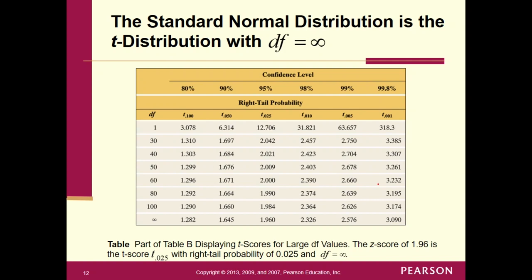Once you've done that, come back to the video. The standard normal distribution is the t-distribution with degrees of freedom equal to infinity. Notice at the bottom of the t-table, the line for degrees of freedom of infinity. Do these values sound familiar: 1.645, 1.96, 2.33, 2.58? Yes — because those are the critical values for z. You don't even have to memorize the z critical values because they're at the bottom of the t-table.